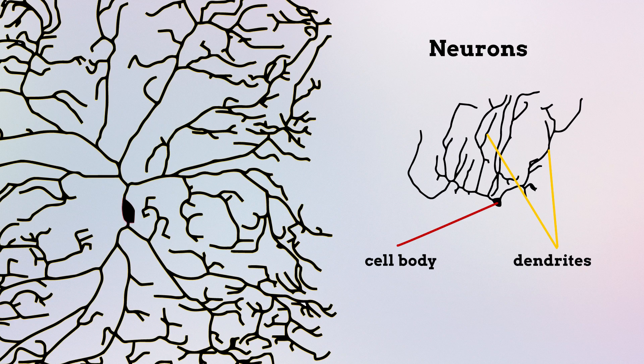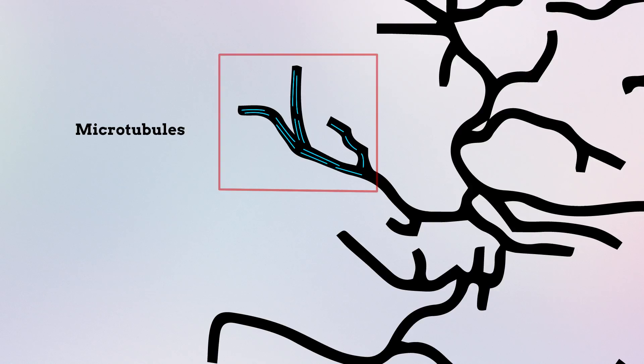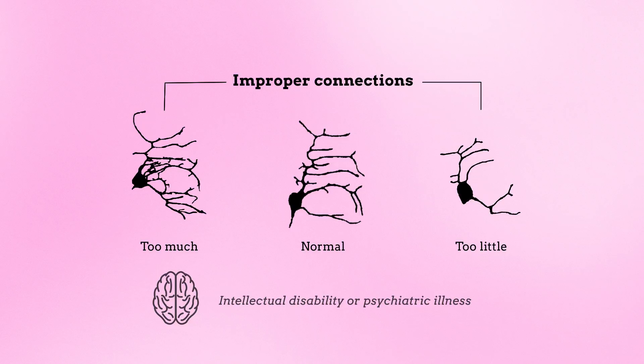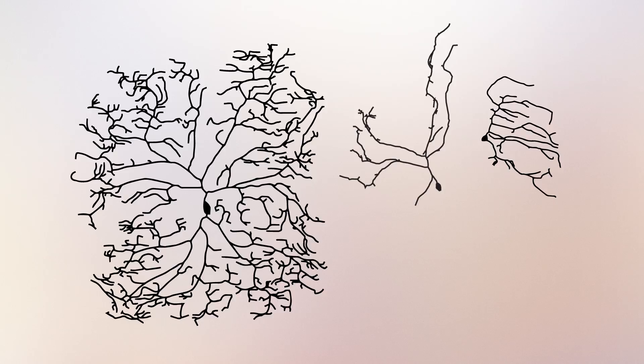During brain development, neurons form a unique tree-like pattern of dendrites that fits their specific function. New dendritic branches are stabilized by microtubules, which establish the internal structure of cells. However, too much or too little dendritic branching can produce improper neuronal connections, resulting in neuronal dysfunction that can lead to intellectual disability or psychiatric illness.